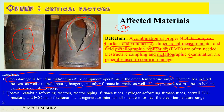Other susceptible locations include hot catalytic reformer reactors, reactor piping, furnace tubes, hydrogen reforming furnace tubes, hot FCC reactors and FCC main fractionators, and regenerator internals — all operating in or near the creep temperature range.